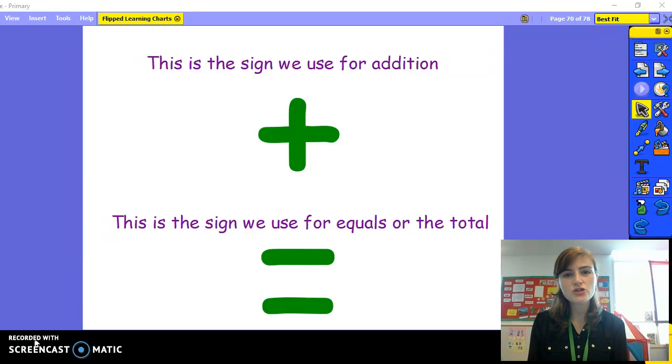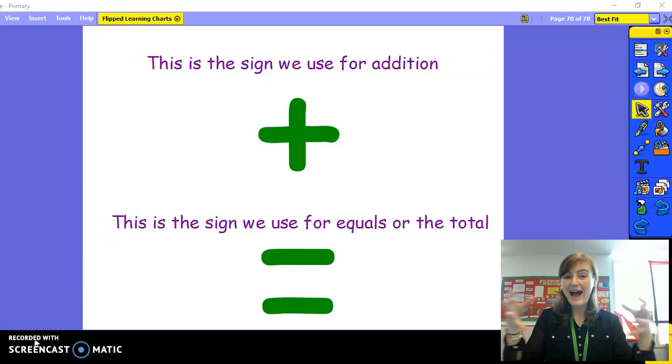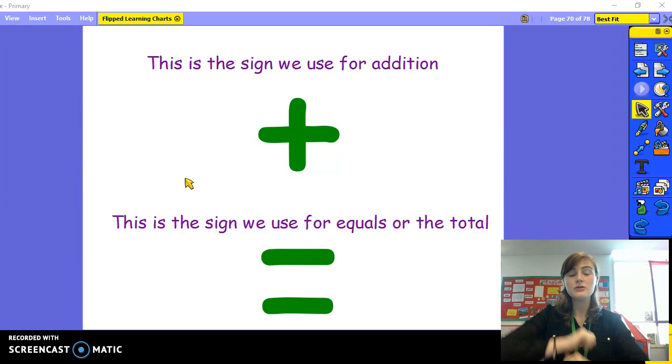Before we start let's just try and remember what addition is. Addition means we are adding. We are taking two groups or three groups and adding them together to find the total or how many together. This is the sign we use for addition. It's the addition or the plus sign. This is the sign we use for equals or the total. Let's get started.